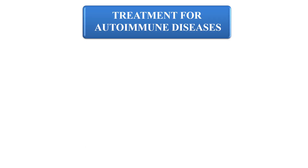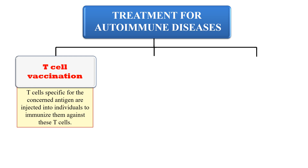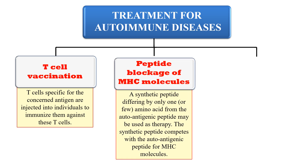For treatment of autoimmune diseases, there are three main approaches. First is T cell vaccination, where specific antigens are injected into individuals to immunize them against self-reactive T cells. Second is peptide blockage of MHC molecules — since T cells recognize the MHC–antigen complex, we can block the MHC molecule using a synthetic peptide that differs in only one or a few amino acids. With MHC blocked, no MHC–antigen complex forms, so the auto-reactive T cell cannot recognize the antigen and autoimmune disease does not occur.